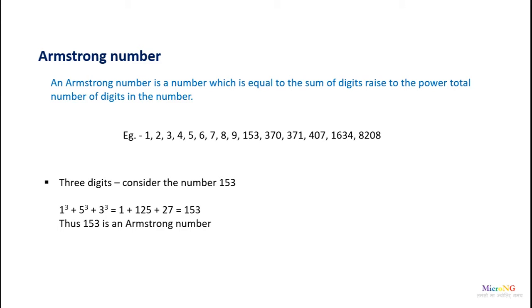Let us see how we calculate for a three digit number, 153. The total number of digits present in 153 is 3, so we calculate each digit raised to the power 3 and find the sum: 1 raised to 3 plus 5 raised to 3 plus 3 raised to 3, which equals 153. Since the original number and the calculated result are the same, it is an Armstrong number.